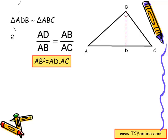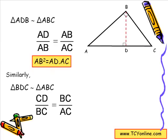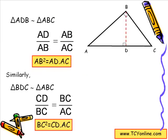Similarly, triangle BDC is similar to triangle ABC. So CD/BC = BC/AC. Again, by cross multiplying, we get BC² = CD × AC. Now let's start with AB² + BC². We know that AB² = AD × AC and BC² = CD × AC, which we have already proved. So we simply plug these into AB² + BC².